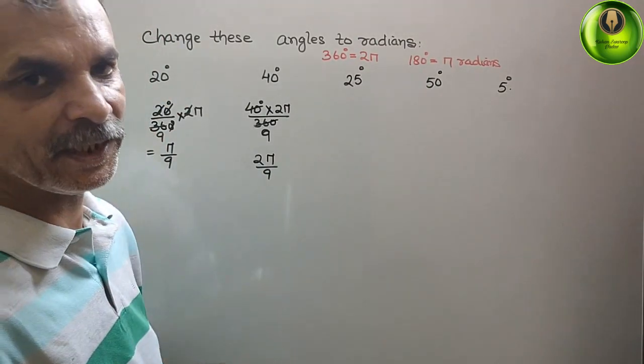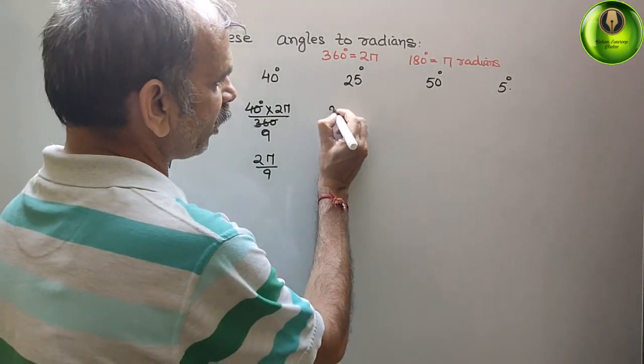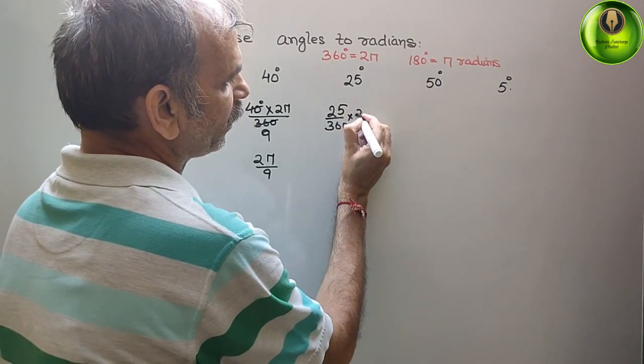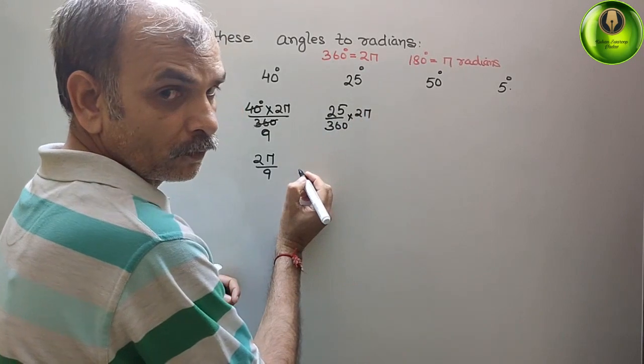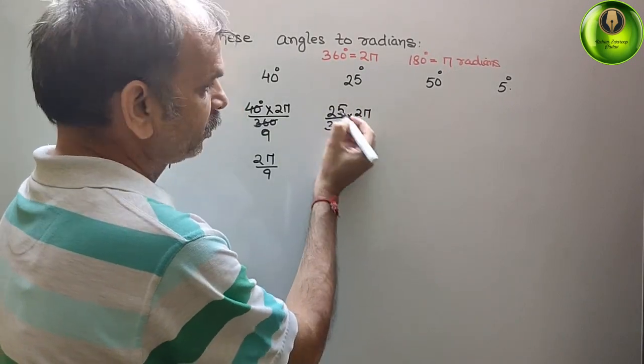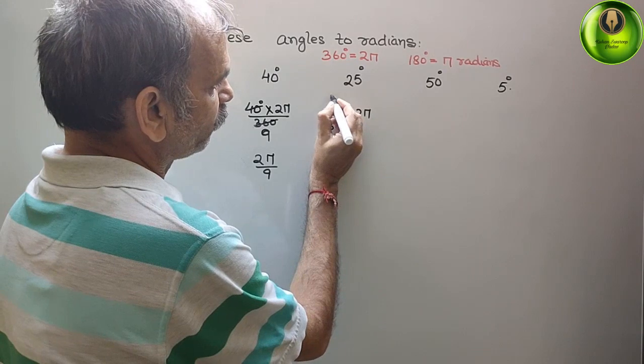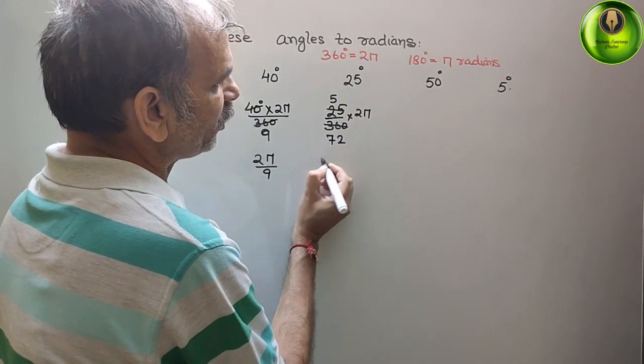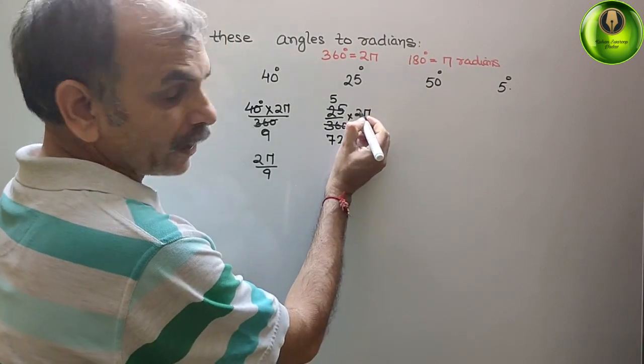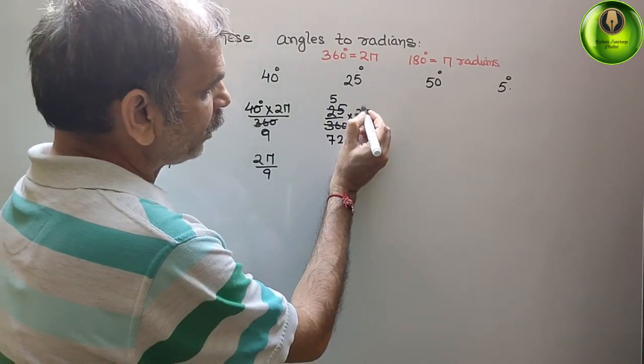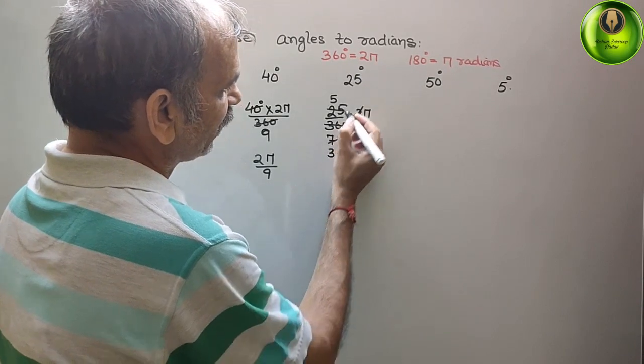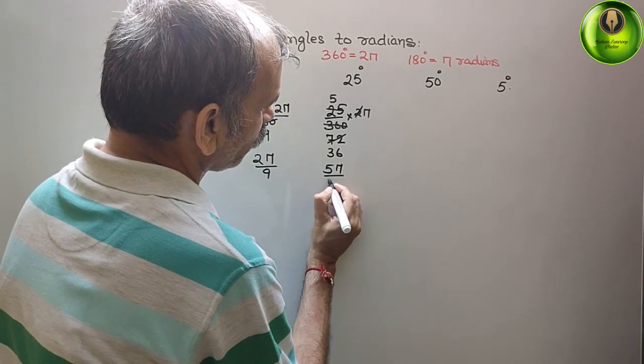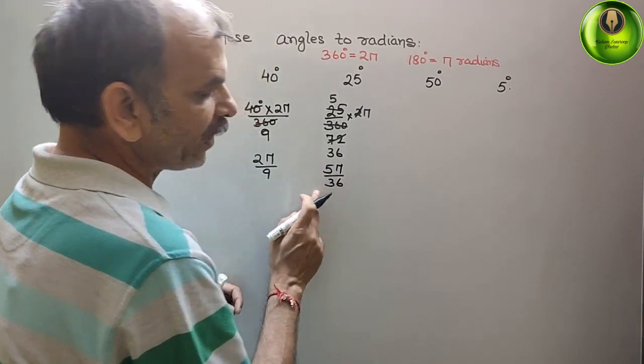Next, 25 degree. That means 25 by 360 into 2π. Now cut it by 5 first. So here comes 5, and this is what? 7 and 2, 72. So now you can cut it by 2 or reduce by 2. So here you will get 36. That means 5π by 36. This is your radians.